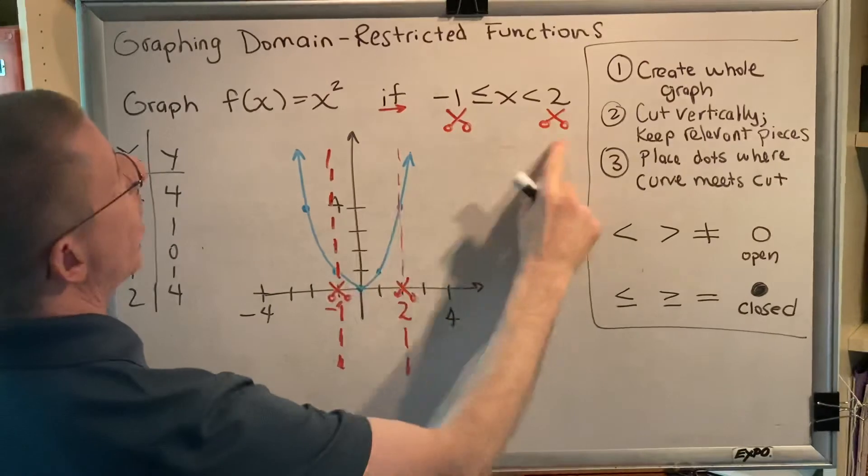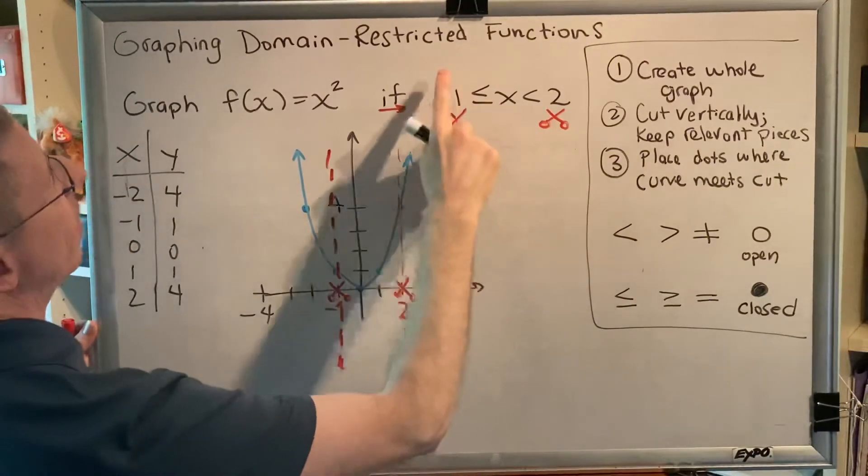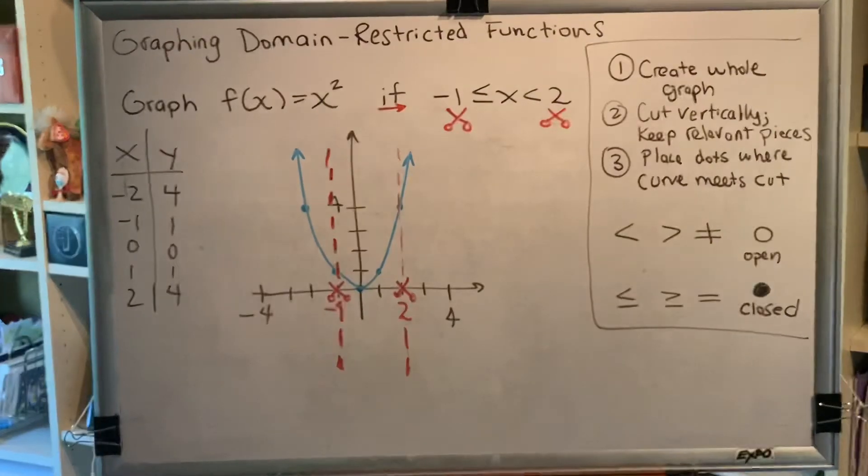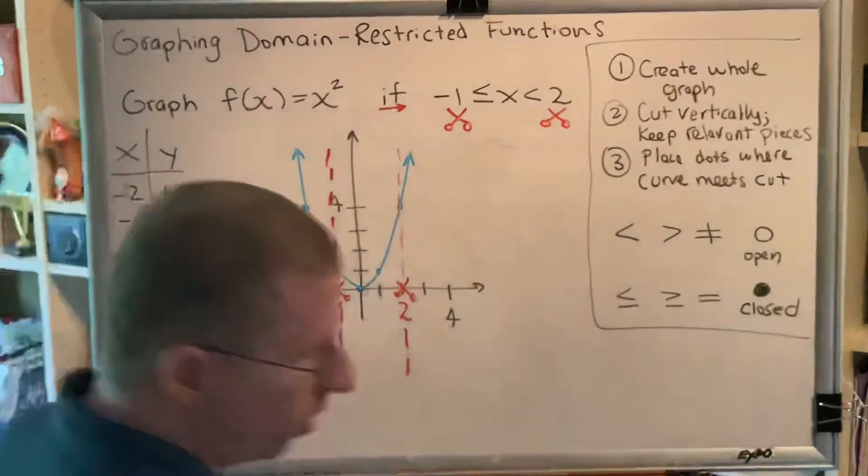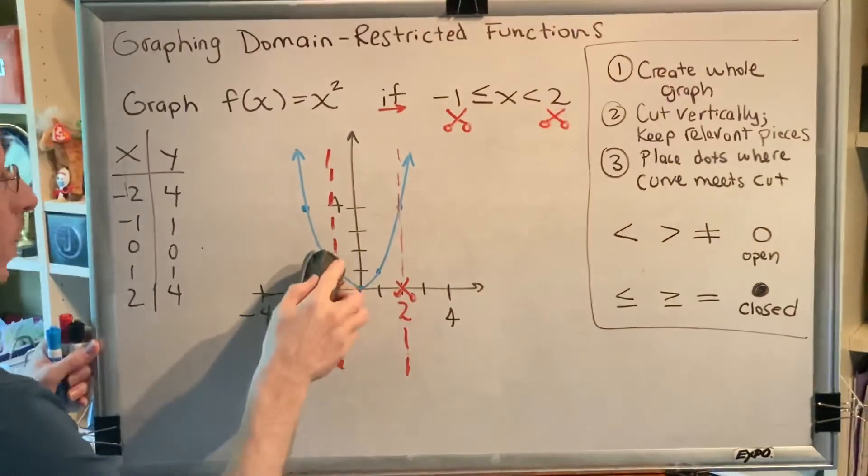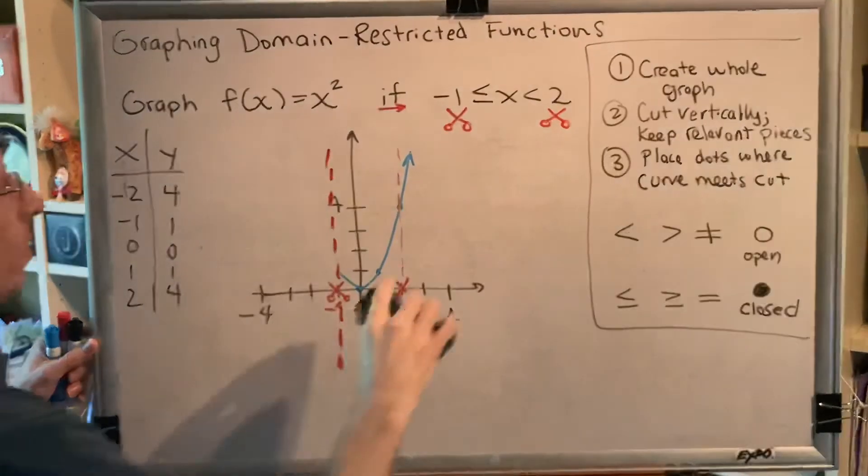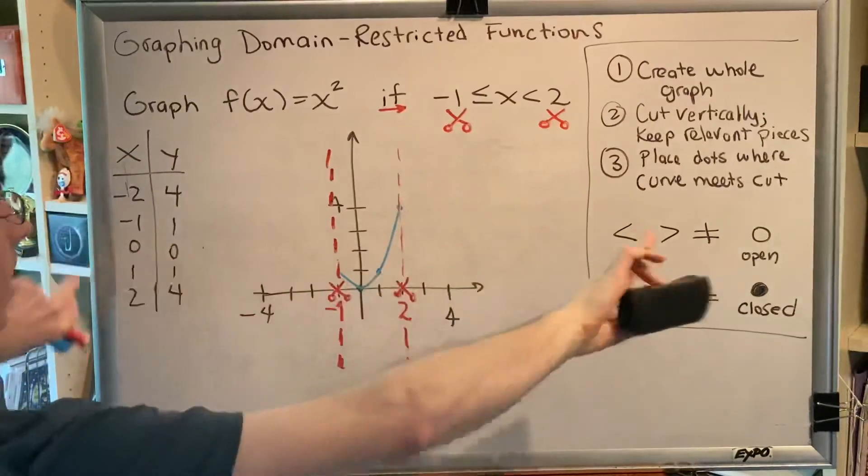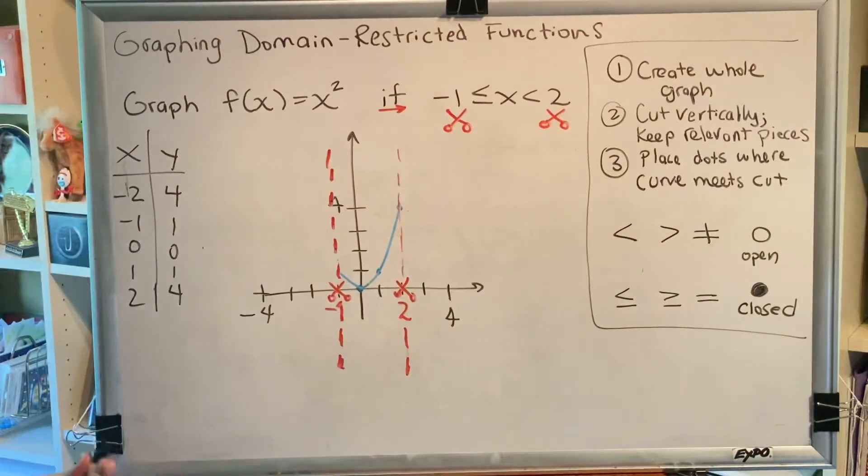Well, that's where we have to understand how inequalities work. Notice that the x is in between the negative 1 and the 2. So what that means is that we want to keep the part of the graph that is in between the negative 1 and the 2. Therefore, all of this goes away, and all of this goes away. Anything outside of those dashed lines is gone. Anything inside the dashed lines is kept.